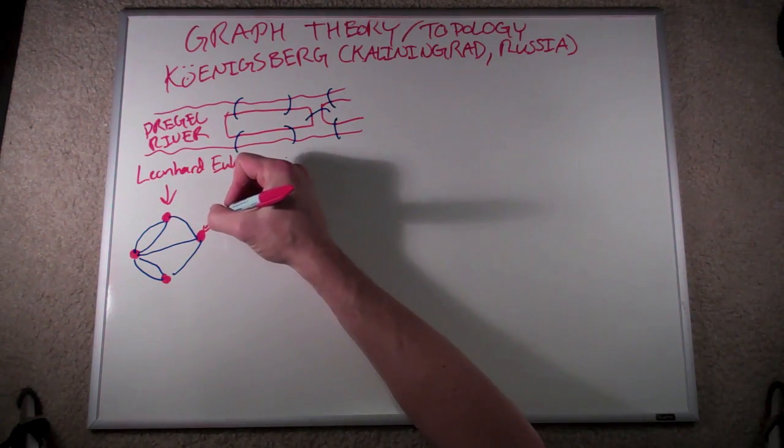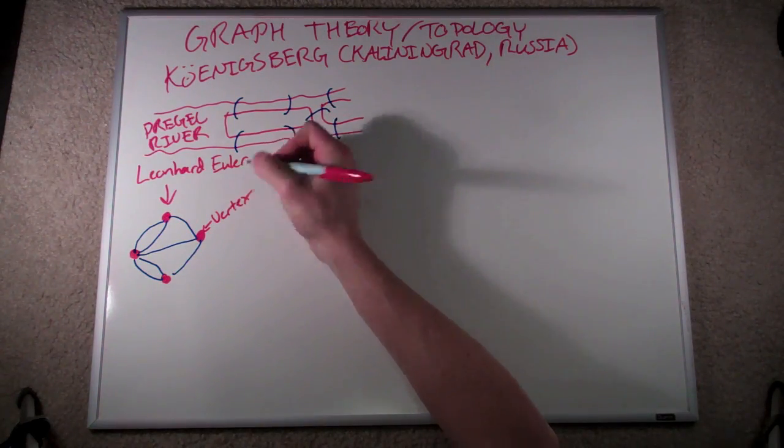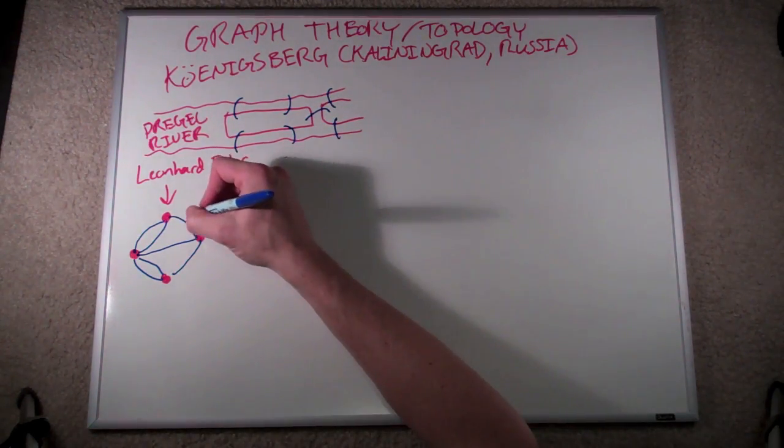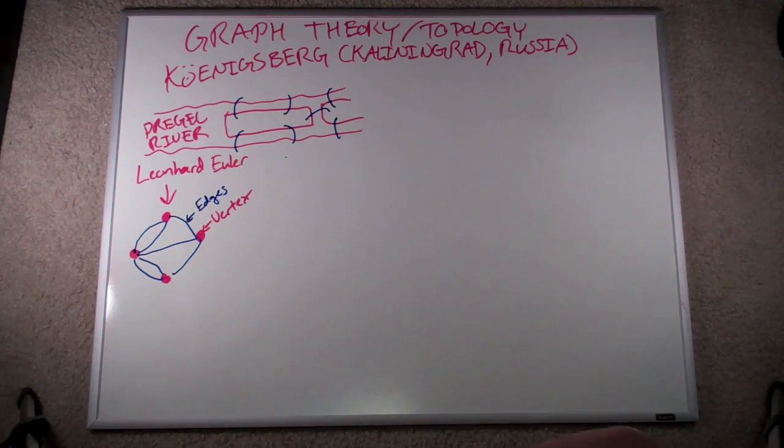He referred to each dot as a vertex, and to each of the line segments in between the vertices as edges. He realized very quickly that the properties that vertices and their edges had was paramount to solving this problem.